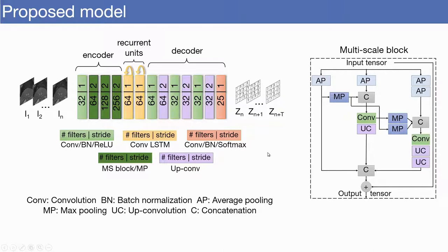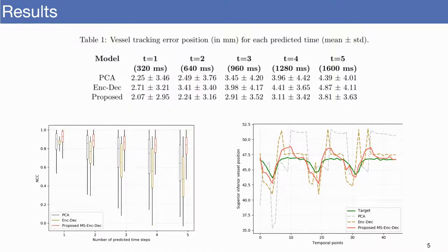During training, we used a weighted cross-entropy loss function to promote class rebalancing. We followed a leave-one-out scheme. Our model was compared with the framework proposed by Luan and collaborators and with statistical modeling. The experiments were aimed at investigating the importance of the multiscale architecture design and the effect of increasing the number of predicted frames on the overall accuracy of the model.